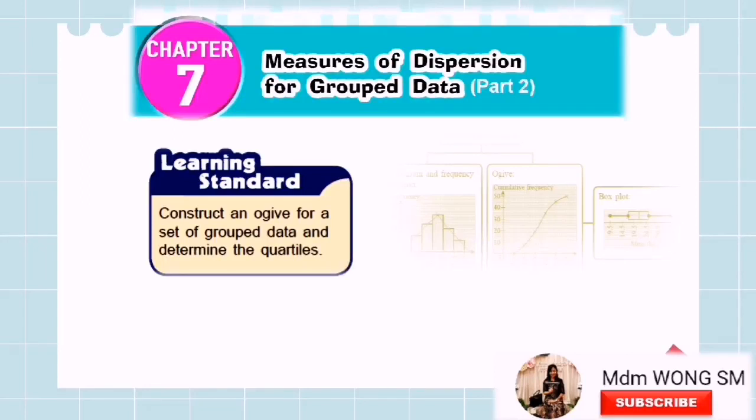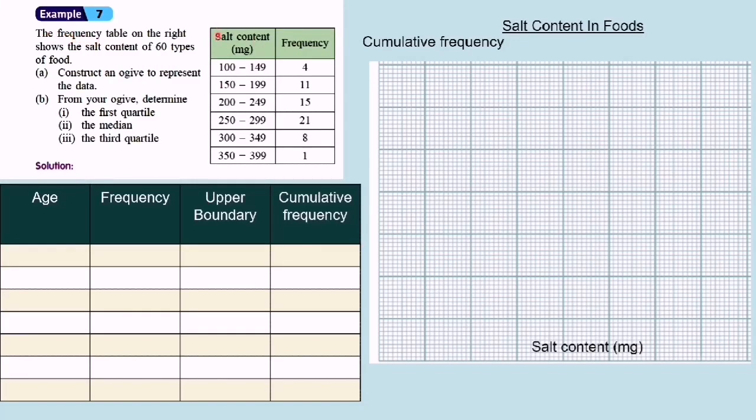In this video, we are going to learn how to construct an ogive for a set of grouped data and determine the quartiles. The frequency table on the right shows the salt content of 60 types of food, and we will construct an ogive to represent the data.